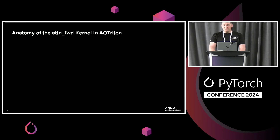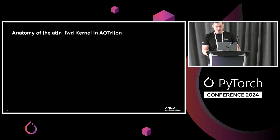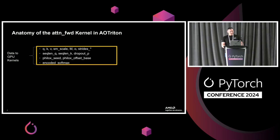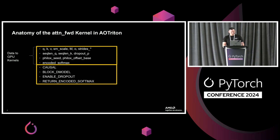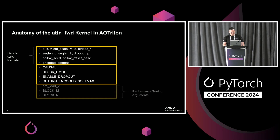Before going into detail about AOTRITON, I want to refresh what the attention-forward kernel arguments look like with respect to our Triton kernel implementation. The first set of arguments are the kernel arguments you'd be familiar with, such as the QKV buffers. The next set are compile-time choices used to generate more optimal kernels — attention variants like whether dropout is enabled or whether we need to return softmax. Disabling dropout, for example, can save quite a few registers and produce a very different kernel at the ISA level.